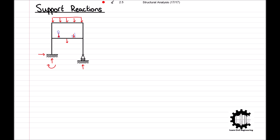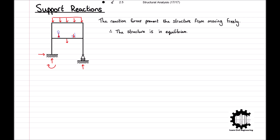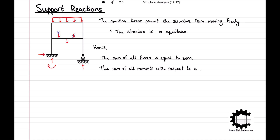This diagram visualises the forces and moments just stated being applied to a two-storey structure. As the reaction forces are preventing the structure from moving freely, we know that the structure is in equilibrium, and therefore we can calculate the reaction forces, as we know that the sum of all forces is equal to zero and the sum of all moments with respect to a point is equal to zero.